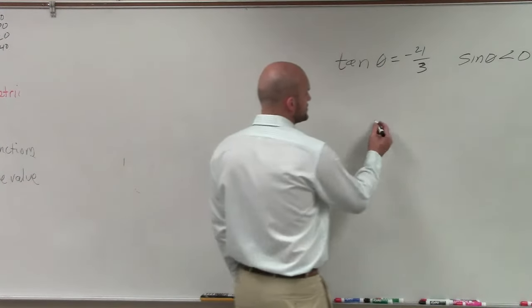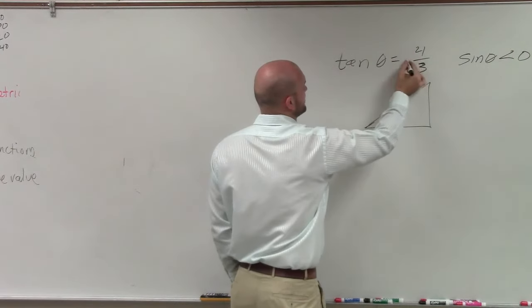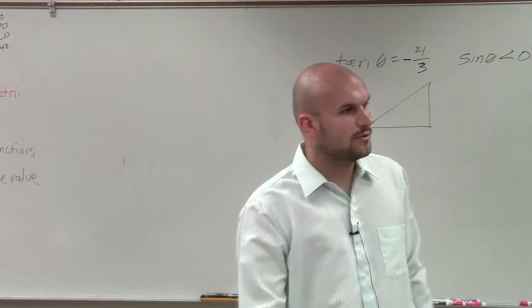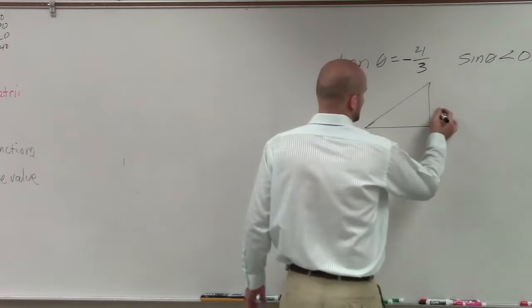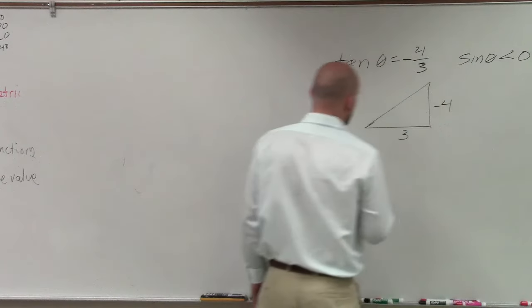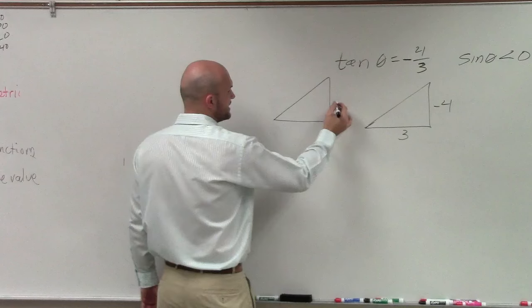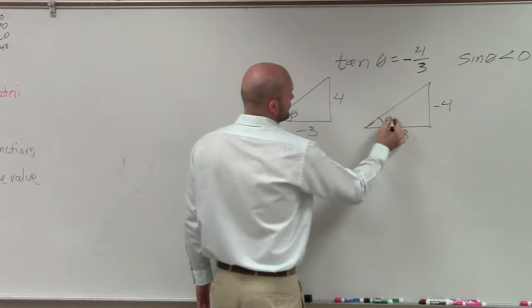So what a majority of students do is they go ahead and draw a triangle. Sorry, let's write it like this. So that becomes an issue because what is negative, right? That means we have two possible triangles. We could have negative 4 over 3, or we could also have a triangle that is 4 over negative 3, right?